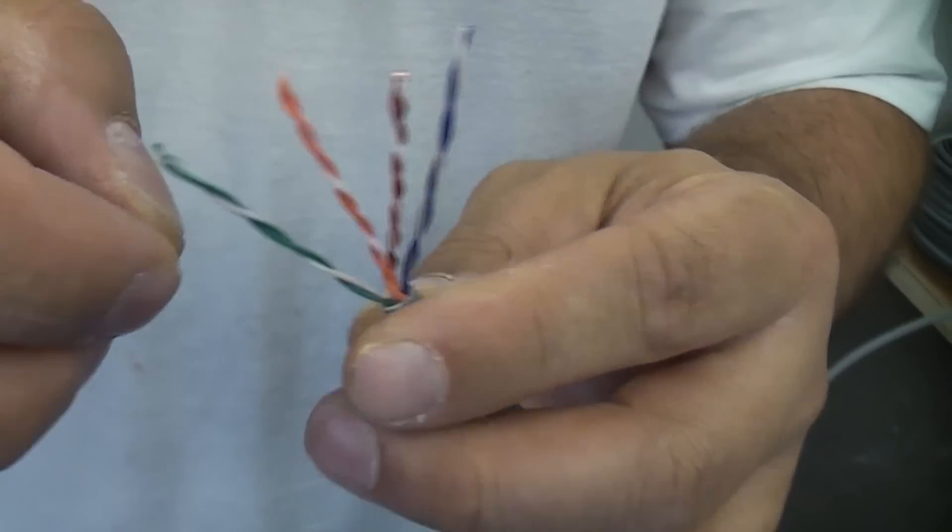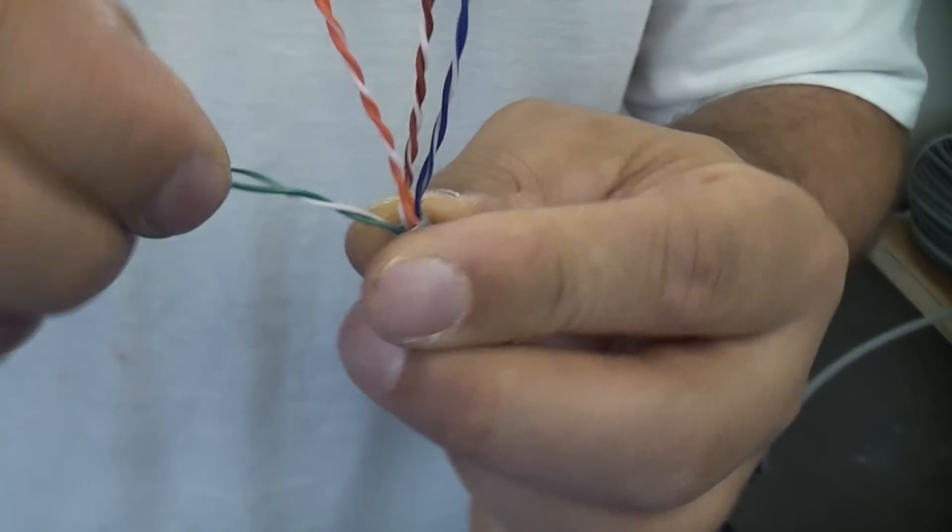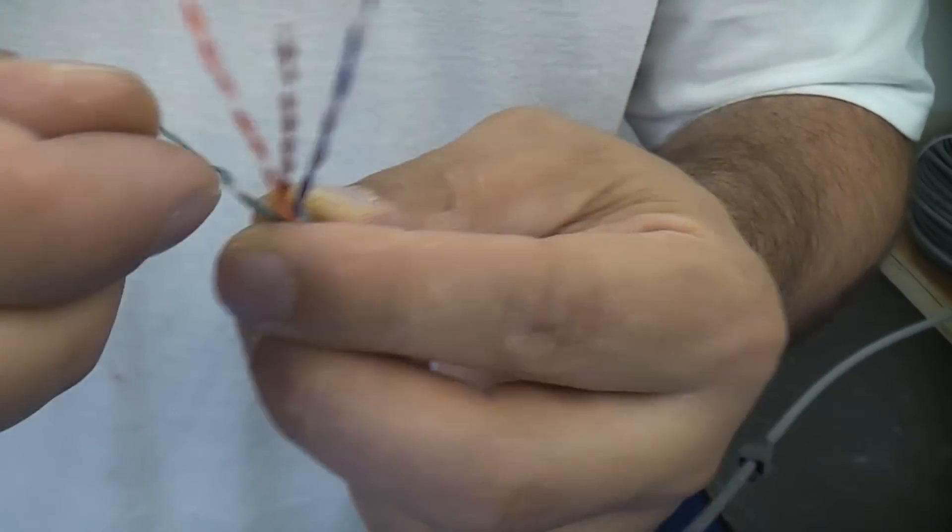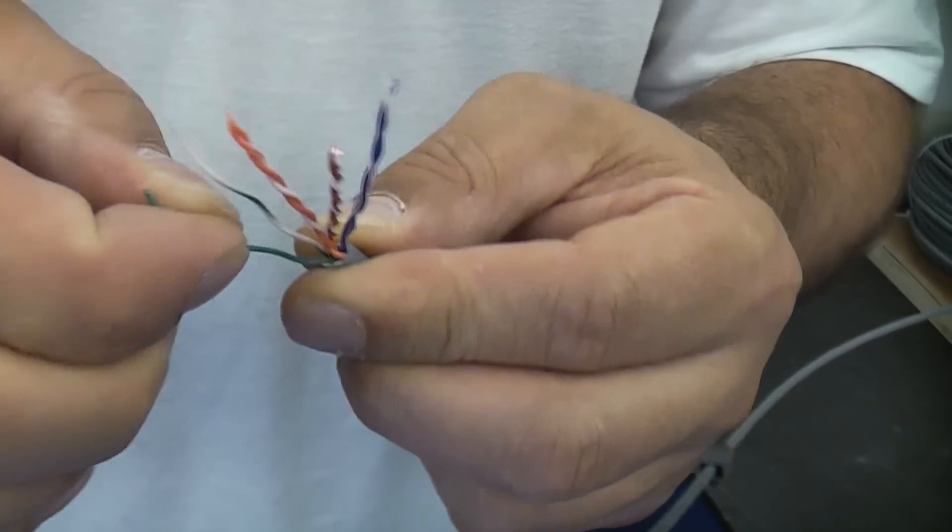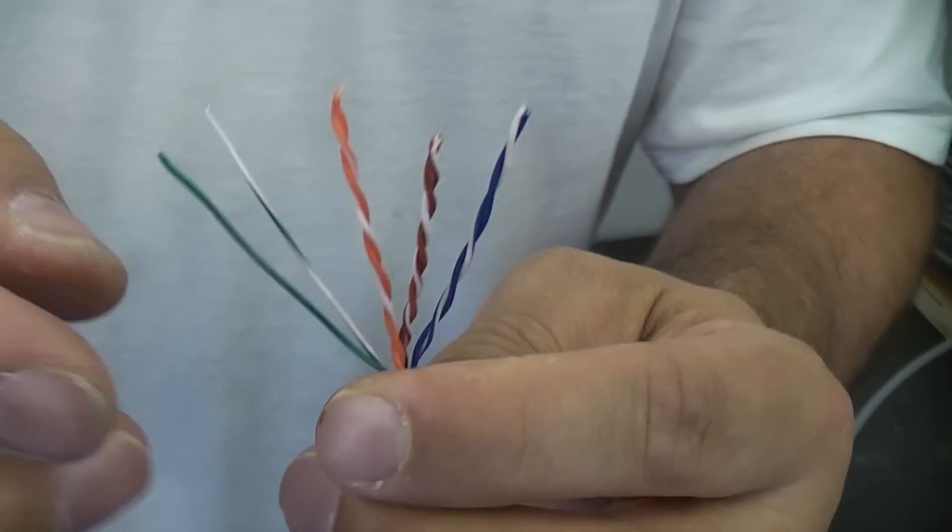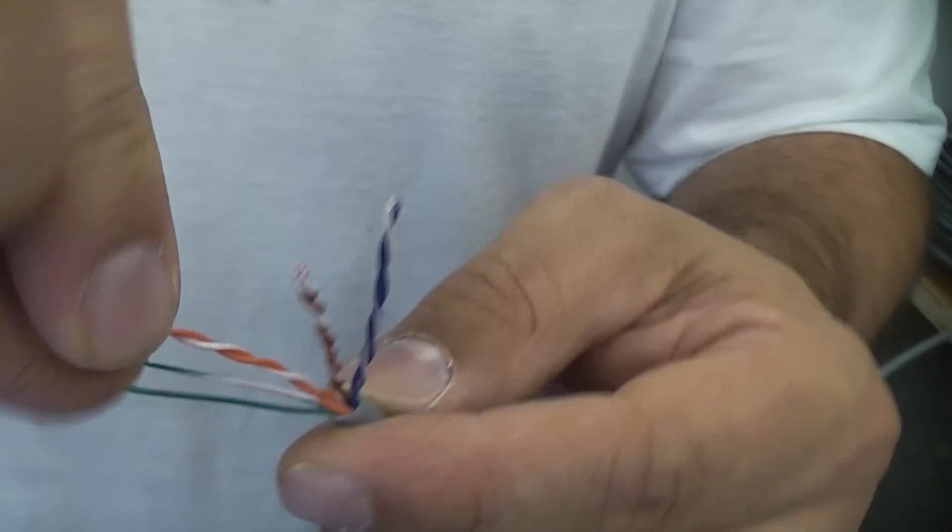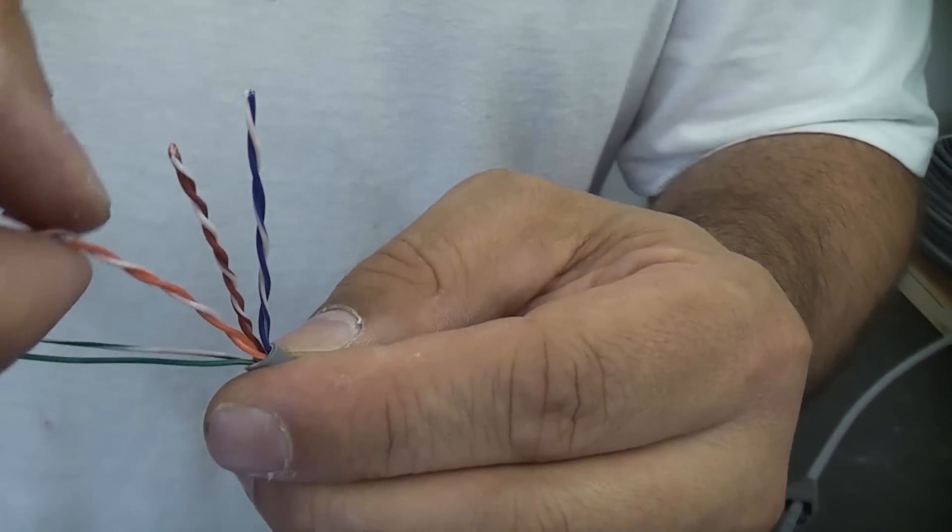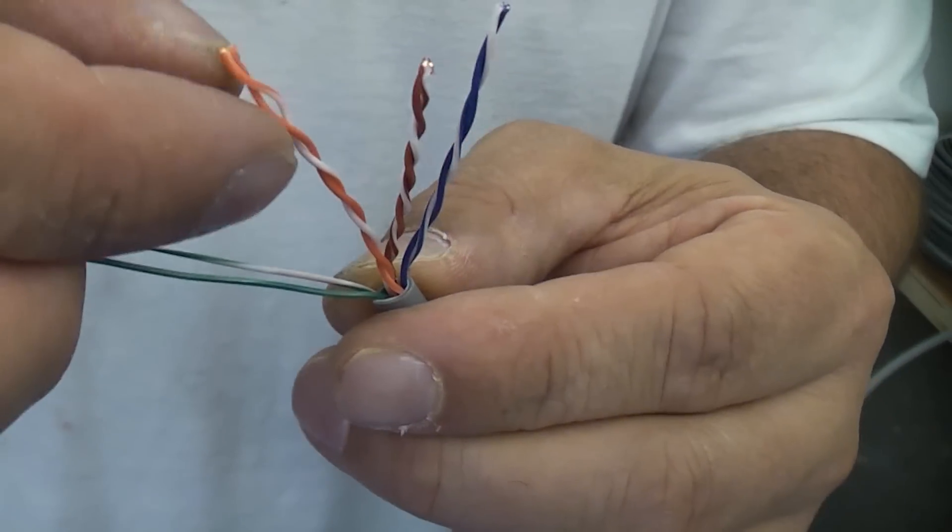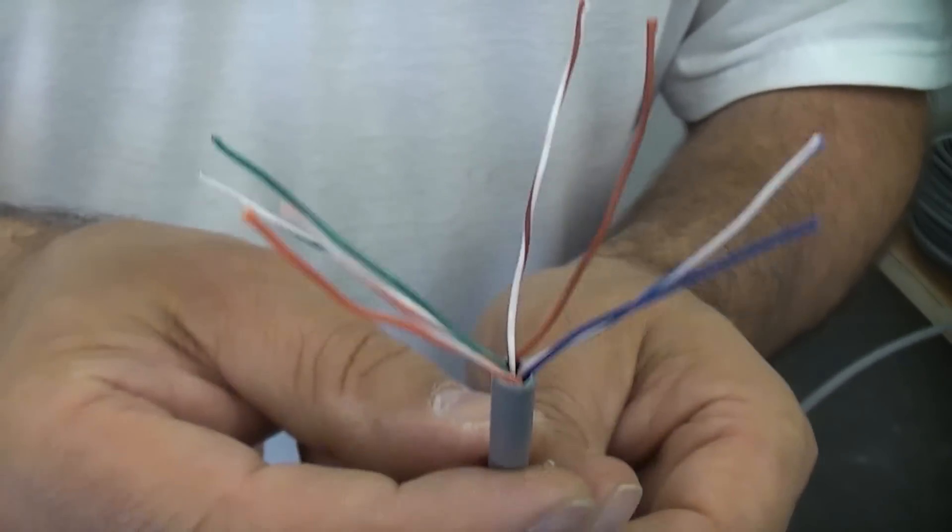So we need to start off by untwisting all of the pairs. And we need to straighten out the wires the best we can. It can be difficult doing this, especially when you get onto Cat 6 cable which is slightly thicker, it is much more difficult straightening out the pairs.